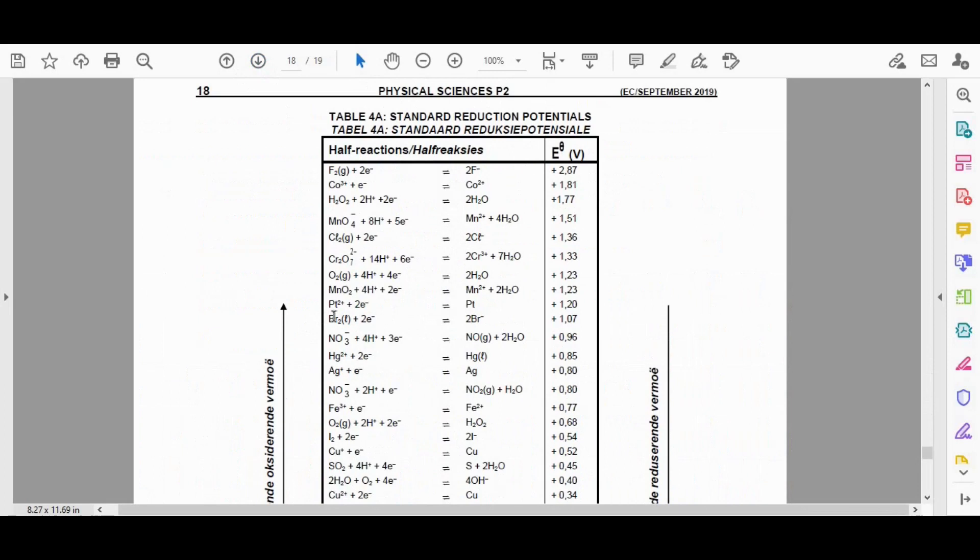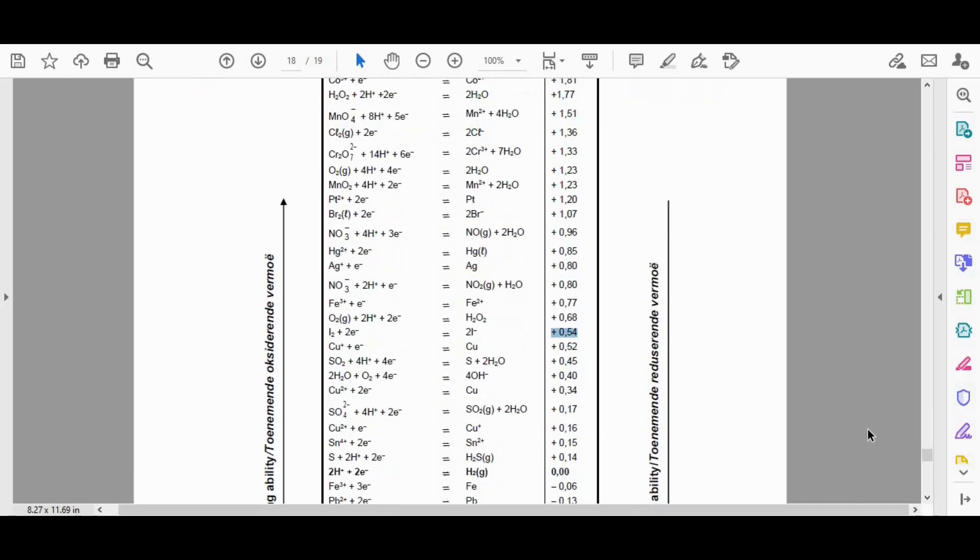We found that Br was up here. And here's the iodine I2 plus two electrons gives us 2I minus. And we get a value of positive 0.54. All right.